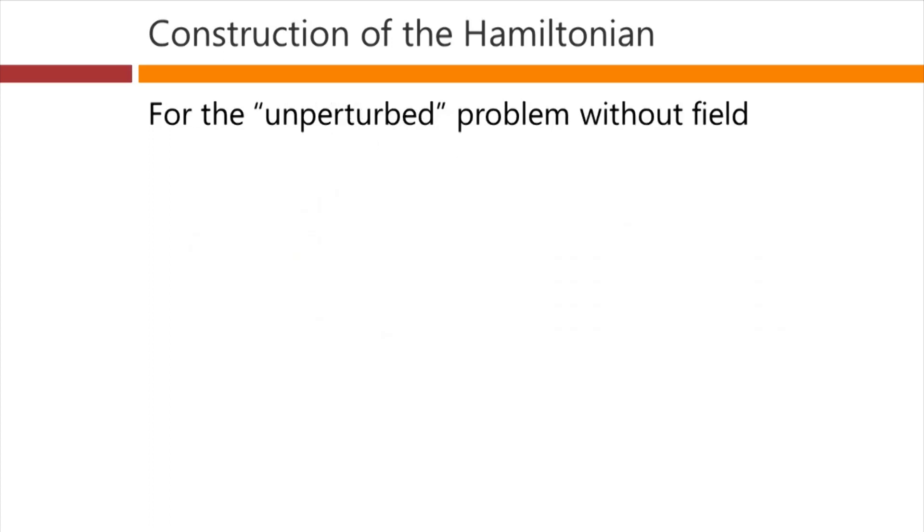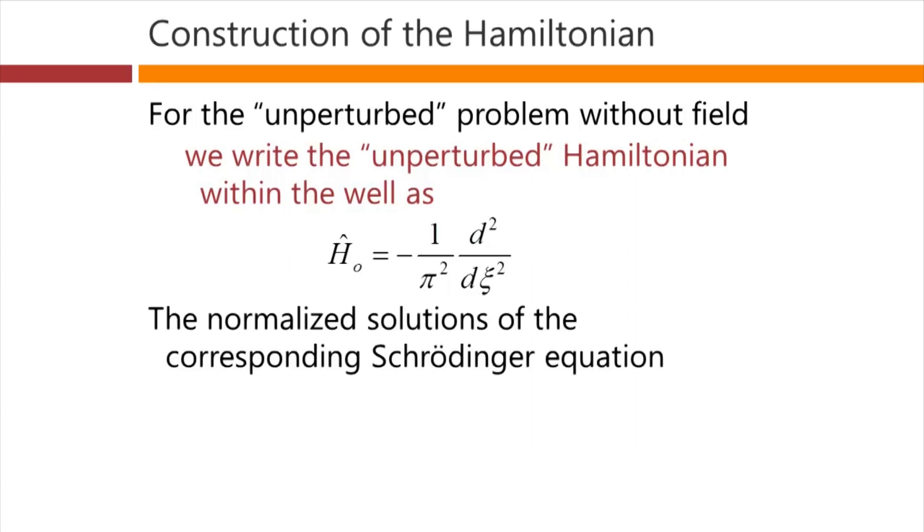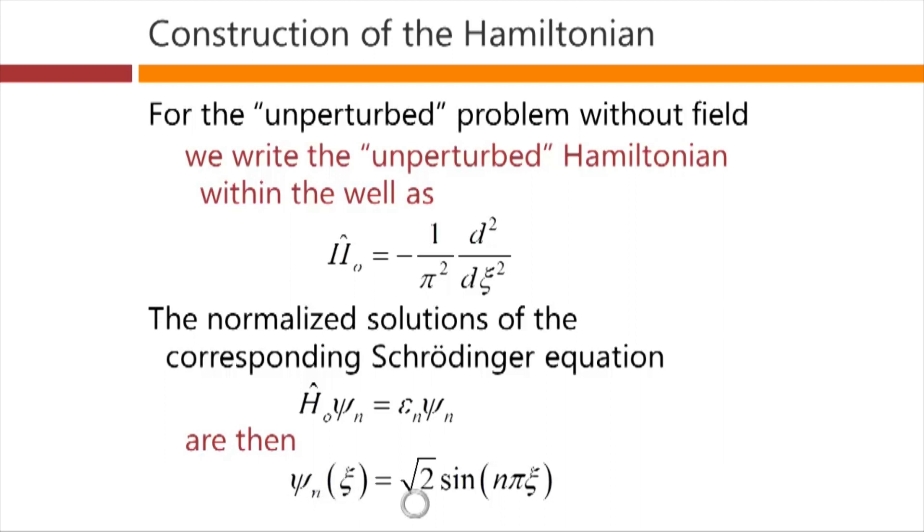For the unperturbed problem, that is, the one before we apply the field to it, we can write this so-called unperturbed Hamiltonian within the well as the usual simple Hamiltonian with a potential of zero. We've chosen it to be zero in the unperturbed situation when we're within the well. And we know the solutions to this problem, and writing them in this normalized form, we would have our corresponding Schrodinger equation with the unperturbed energies written as epsilon n, and then the wave functions of this unperturbed problem in these dimensionless units would simply be psi n of xi equals root 2 times sine of n pi xi. So just a dimensionless form of the usual solutions of the infinitely deep well problem.